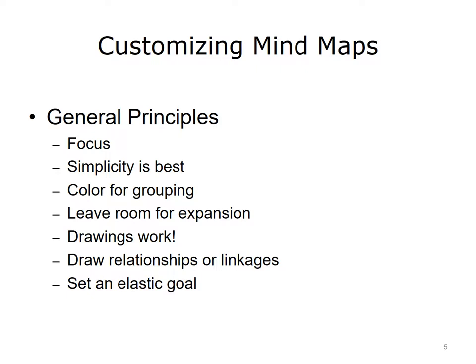Second, simplicity is best — start with the major features and then drill down to the more detailed. Best to start with a simple surface structure and work to add the limbs and leaves as the project or tasks become clearer. Third, the use of color is helpful as a mechanism for grouping similar things. Fourth, leave room for expansion because as the task definitions grow, so does the tree — have erasers handy. Fifth, drawings really do work; many people use bits of artwork for illustration. Sixth, illustrating the linkages or relationships between concepts or branches is beneficial, and set a goal but be flexible and willing to adapt as the map begins to flesh out.